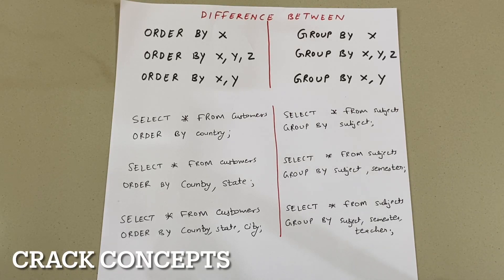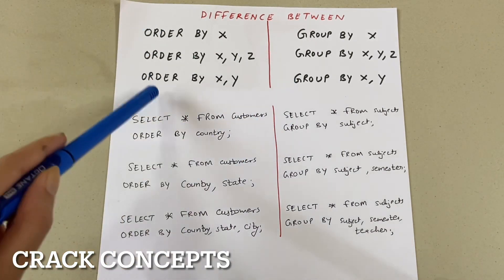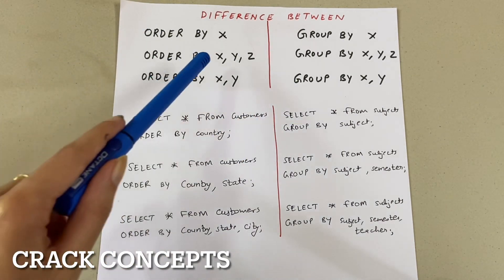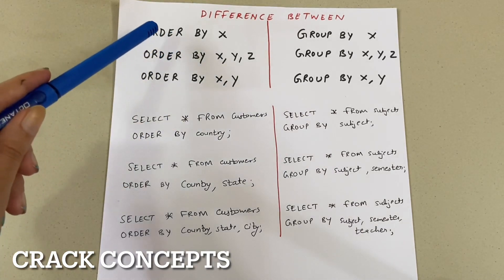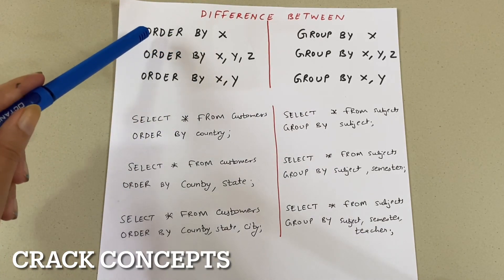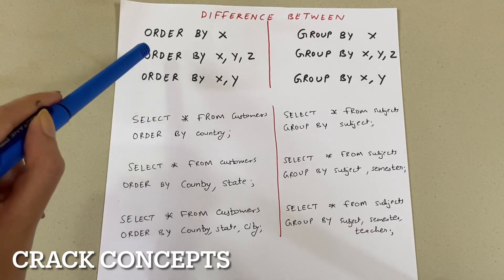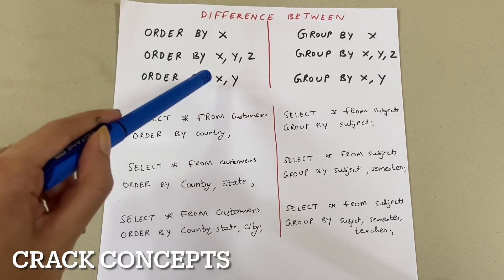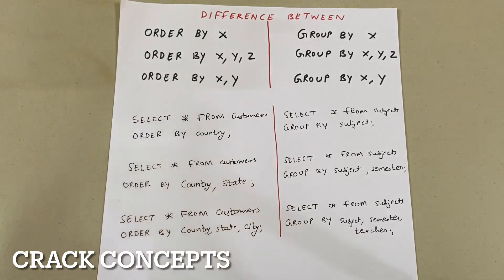Hello everyone, welcome back to another video. In today's video we will understand the difference between ORDER BY and GROUP BY when we use multiple columns. When I write ORDER BY with one column name, and when I write ORDER BY with two or three column names, what is the meaning of that? And similarly for GROUP BY also.